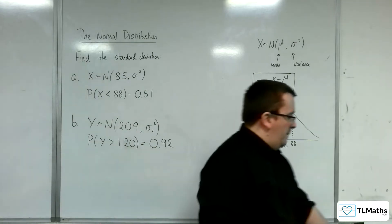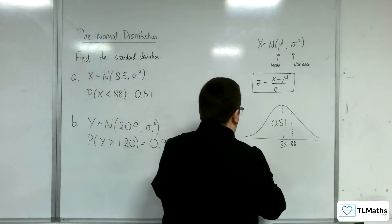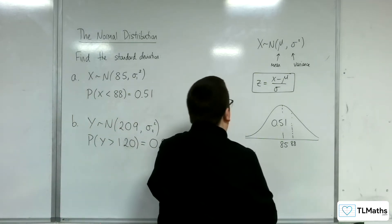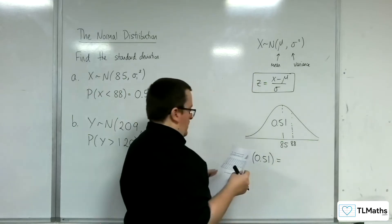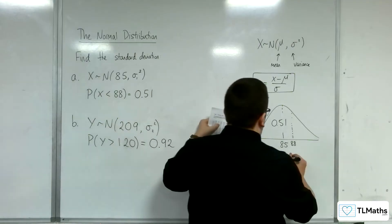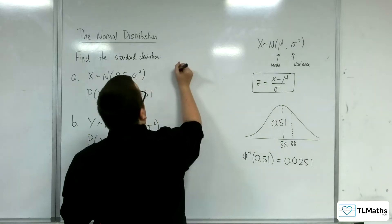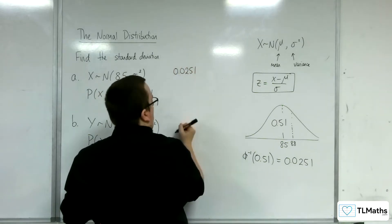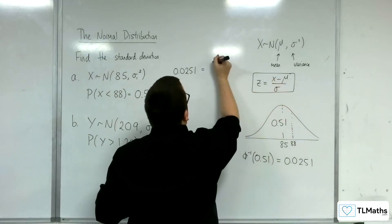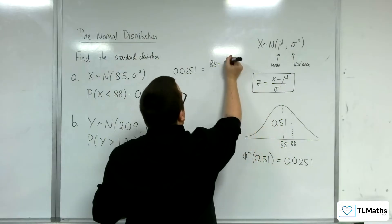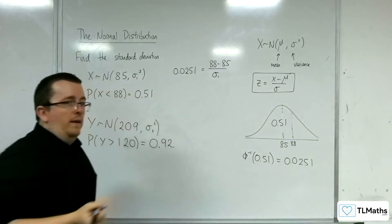We're going to have to look up the z value by using the inverse normal on our table. We're using table 2. The inverse normal of 0.51 is 0.0251. So that's z, and that's equal to x, which is 88, take away the mean, 85, over the standard deviation, sigma 1 in this case.